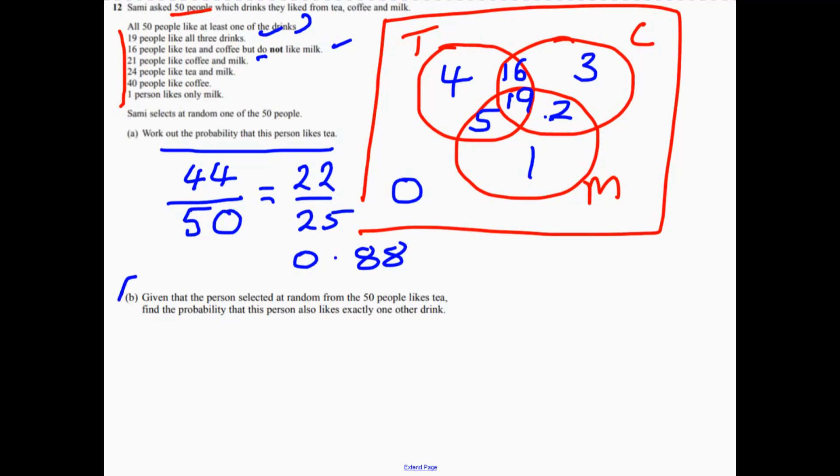Now then, part b. The key word here is given. Given that the person selected at random from the 50 likes tea, so what does that mean?